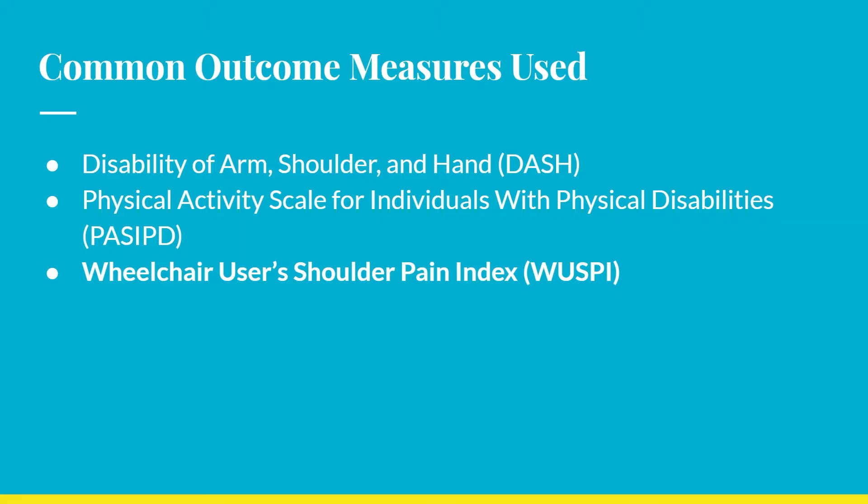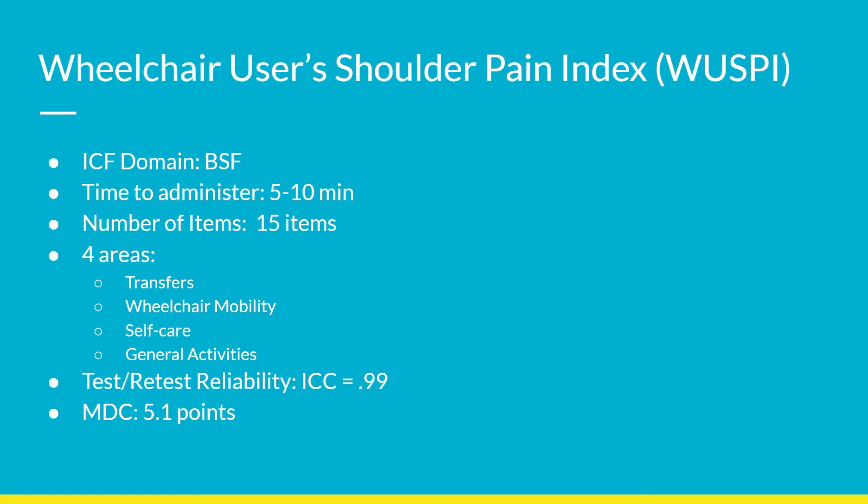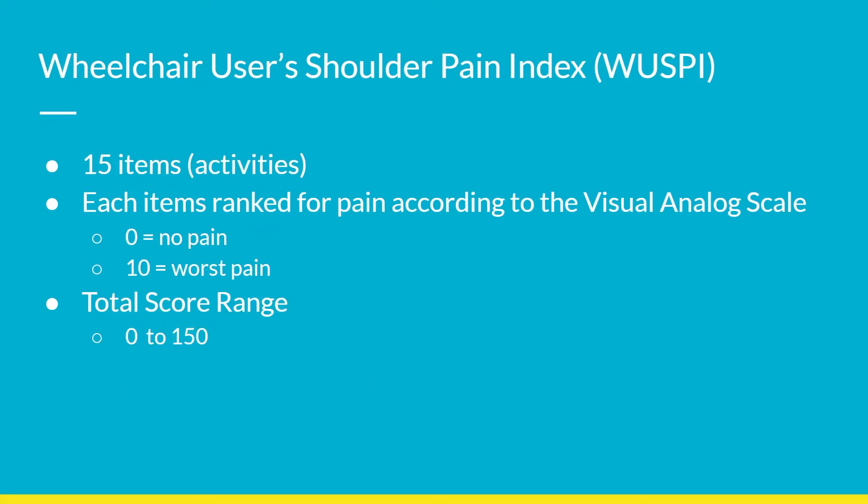The Wheelchair User's Shoulder Pain Index focuses on pain as the body structure and function level outcome measure. It takes about 5 to 10 minutes to administer and covers 15 items comprising four areas: transfers, wheelchair mobility, self-care, and general activities. The measure has excellent test-retest reliability with an intraclass correlation of 0.99. The MDC calls for a change of at least 5.1 points to indicate a true change in pain. Each item is ranked 0 to 10 on the visual analog scale, with 0 equating to no pain and 10 the worst pain possible, for a maximum score of 150.